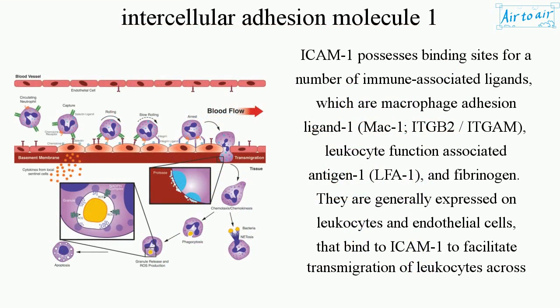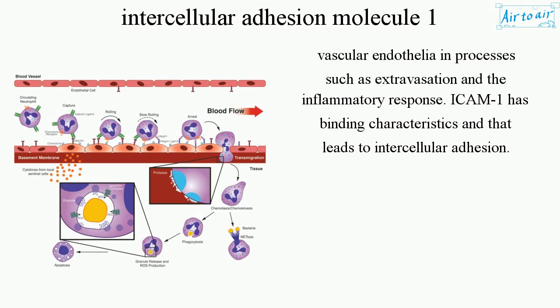ICAM-1 possesses binding sites for a number of immune-associated ligands, which are macrophage adhesion ligand-1 (MAC-1), ITGB-2, ITG-AM, leukocyte function-associated antigen-1 (LFA-1), and fibrinogen. They are generally expressed on leukocytes and endothelial cells, and bind to ICAM-1 to facilitate transmigration of leukocytes across vascular endothelia in processes such as extravasation and the inflammatory response.